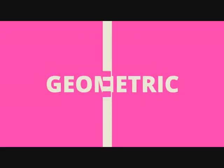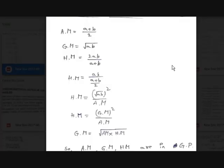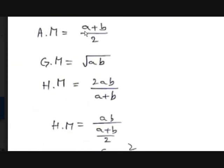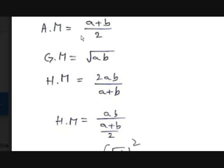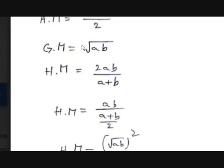First, let's go to their formulae. Arithmetic mean is (a + b)/2, where a and b are two terms. Geometric mean is √(ab), and harmonic mean is 2ab/(a + b), which can also be written as 2 / (1/a + 1/b).